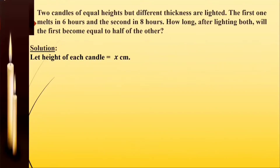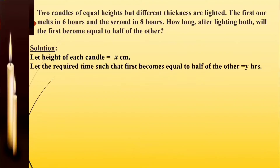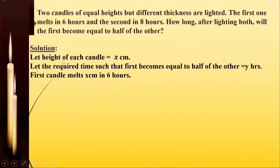Let us see the solution. I have let the height of each candle be x centimeters — they are both of the same height, so I take it to be x centimeters. I'll also assume that the required time, at which the first becomes equal to half of the other, be y hours.